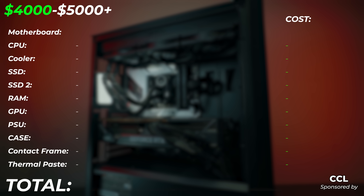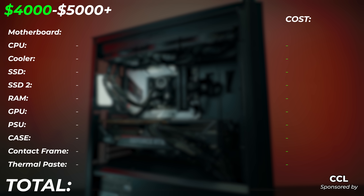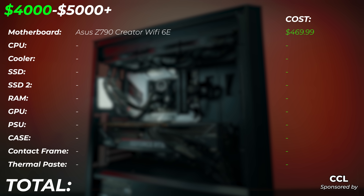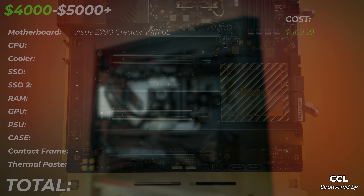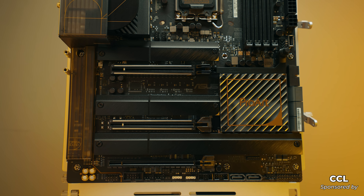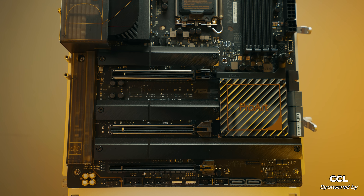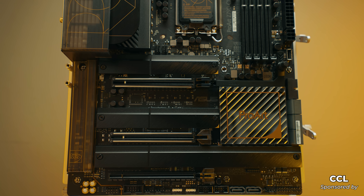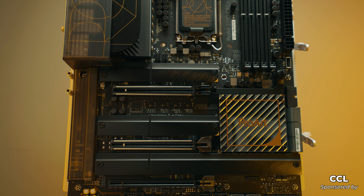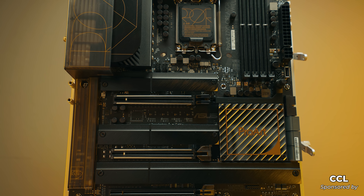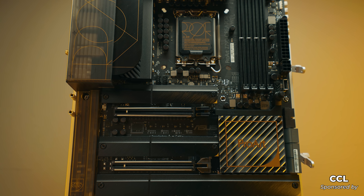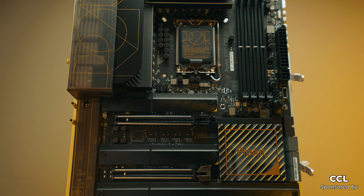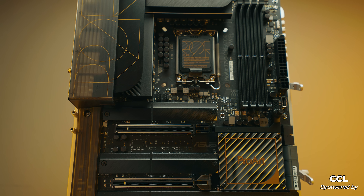If your budget is around four thousand dollars, here's what I would go for. For the motherboard, we're using the ASUS Pro Art Z790 Creator Wi-Fi — this is the ultimate creator motherboard. It features Thunderbolt, 10 Gigabit Ethernet, built-in Wi-Fi 6E, loads of M.2 storage, a super fast front panel USB-C connector, and a nice design. Everything a creator might need is on this motherboard.